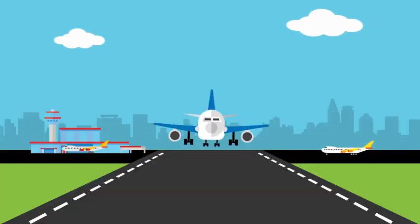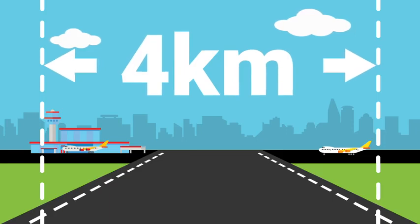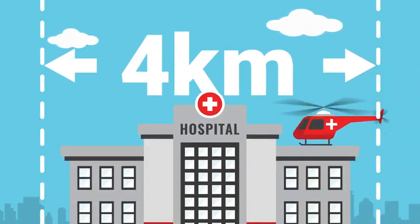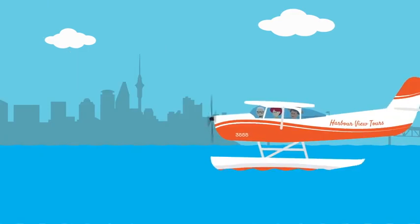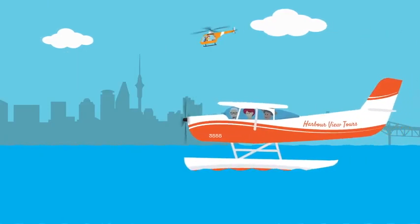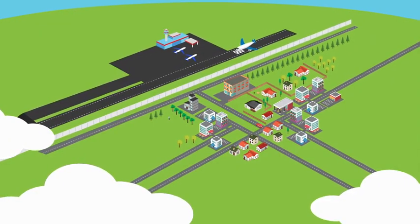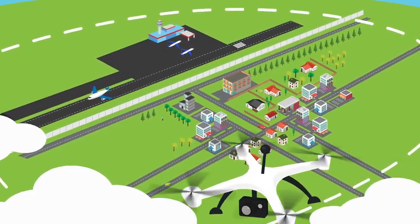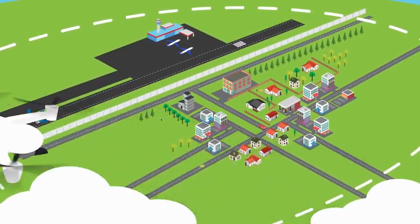That means staying at least four kilometres away from any airport or aerodrome, including helipads at hospitals or those used for sightseeing operations. But what's known as controlled airspace can go well beyond those four Ks around airports.